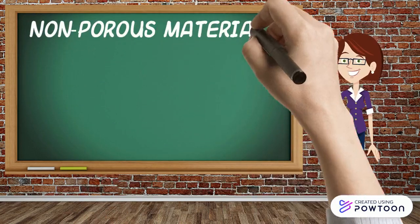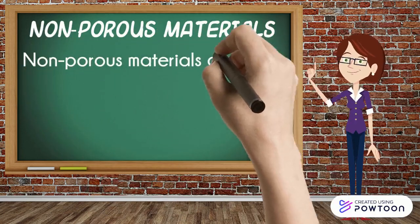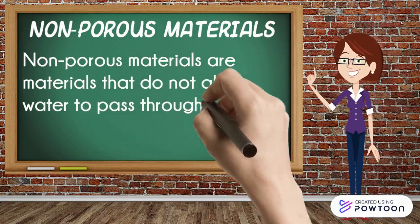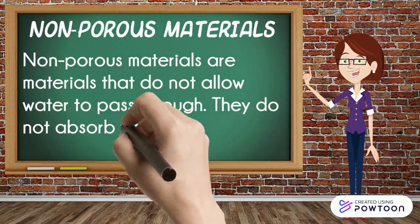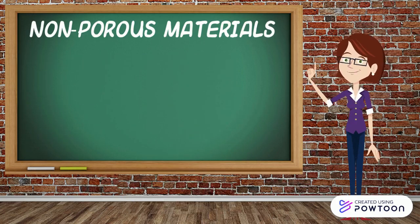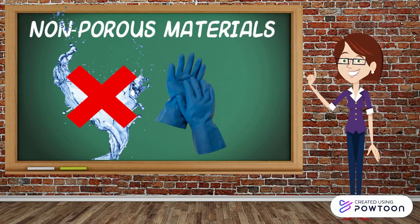Non-porous materials are materials that do not allow water to pass through. They do not absorb water. For example, these rubber gloves — they do not allow water to pass through, which means that rubber gloves are a non-porous material.